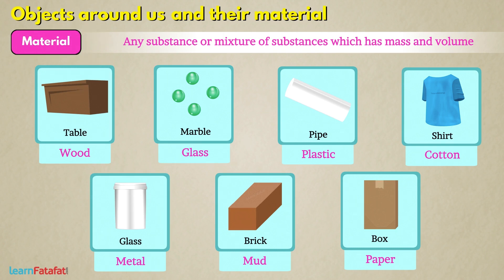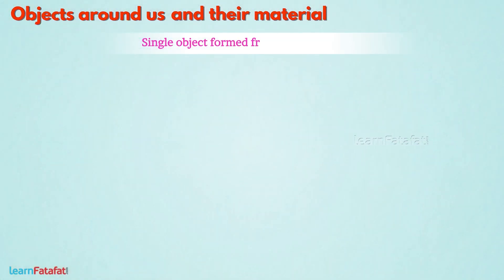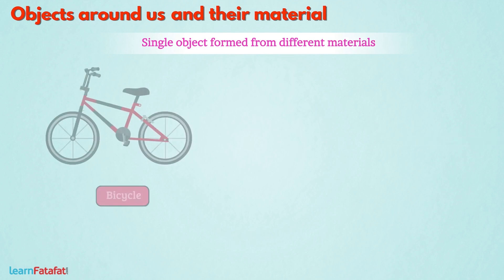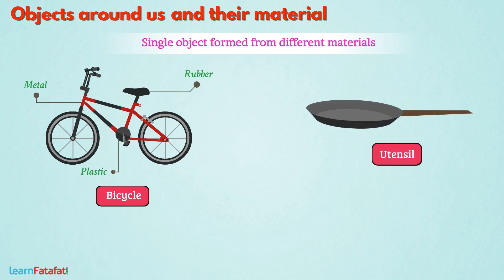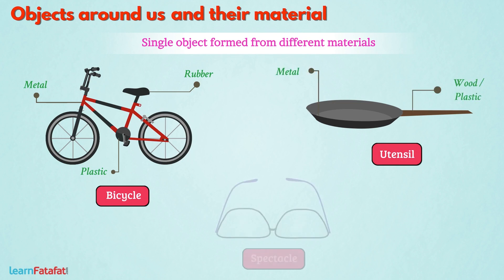We see different objects around us, and these are formed from different materials. While classifying them, we have to consider a few things. A single object is usually formed from different materials. For example, a bicycle is made of metal, rubber, and plastic. A utensil is made of metal with the handle of wood or plastic. A spectacle is made of plastic and glass.